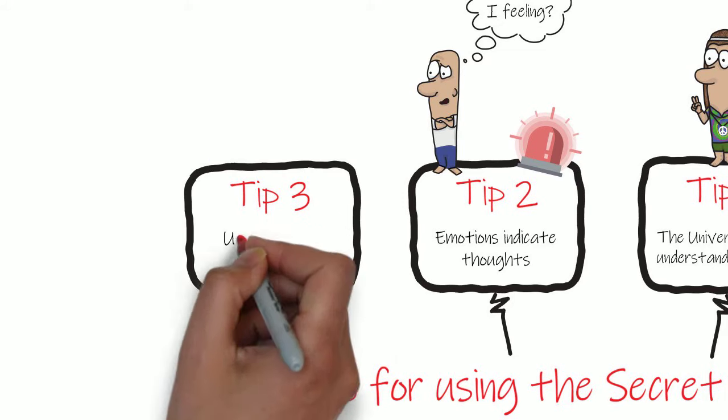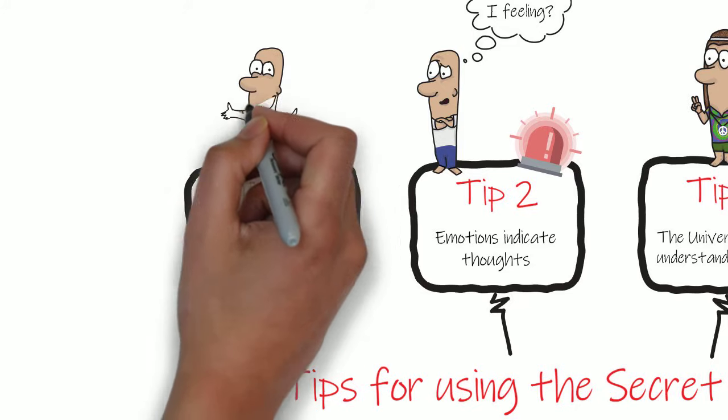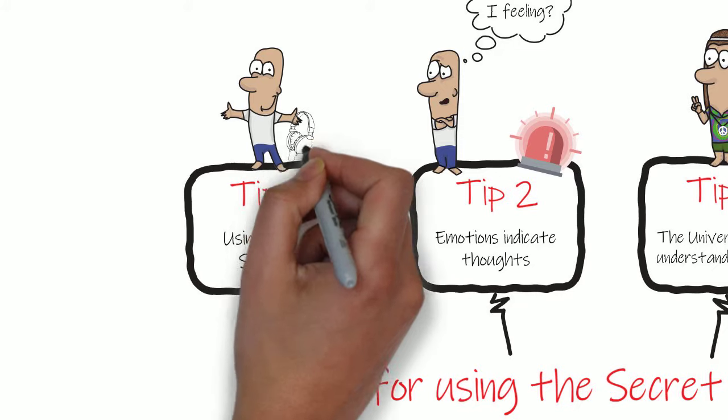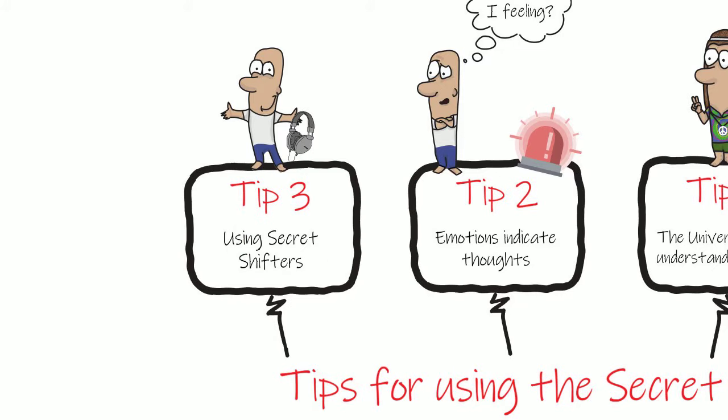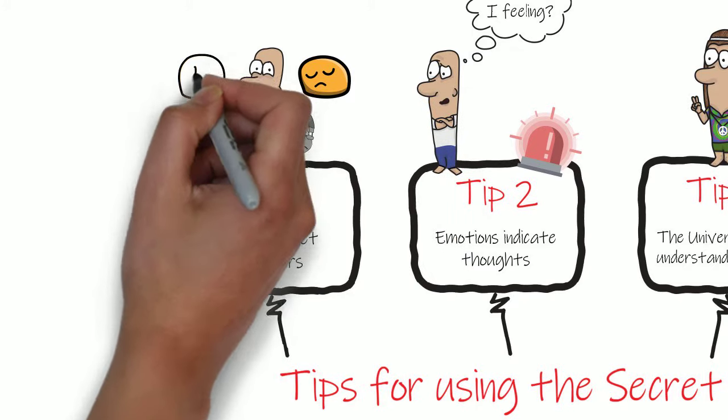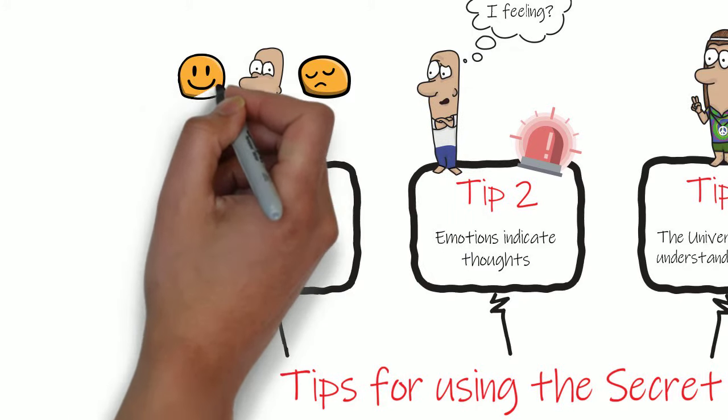Tip 3: Using secret shifters. Secret shifters are anything that puts you in a good mood, whether it's music, thinking about a loved one, or one of your favorite places. Then, whenever you catch yourself with negative thoughts, you use one of your secret shifters to help improve your mood and bring your positive thoughts back.